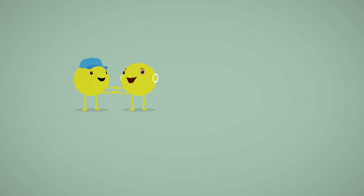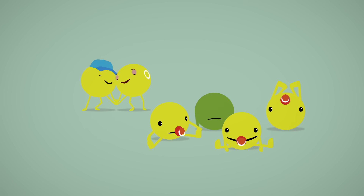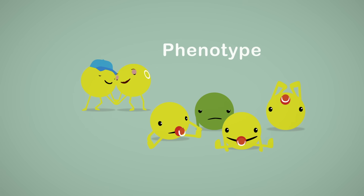Then, in the second generation, where the two heterozygous kids marry, their babies could have any of the three possible genotypes, showing the two possible phenotypes in a three to one proportion.